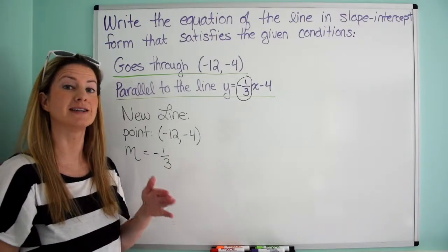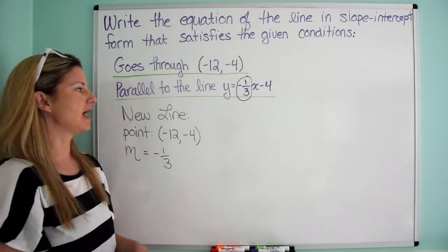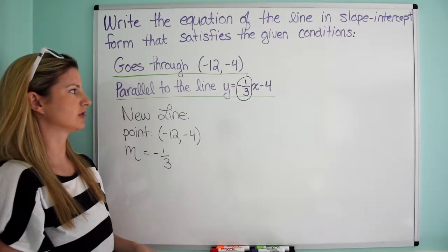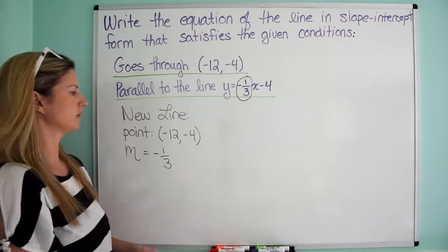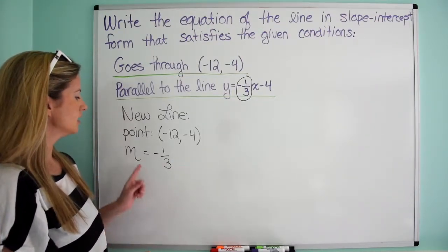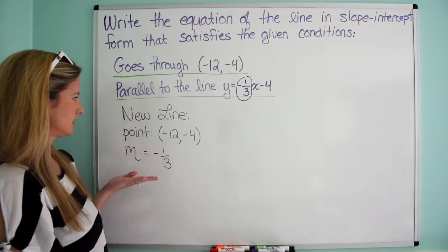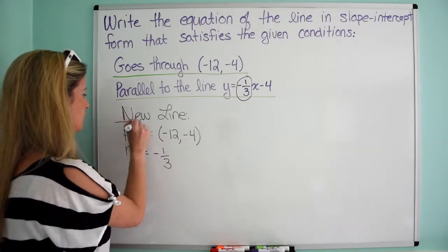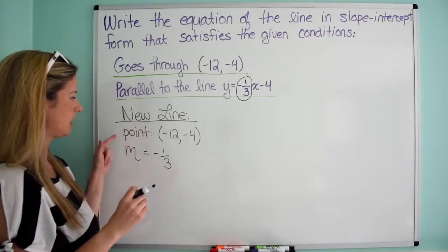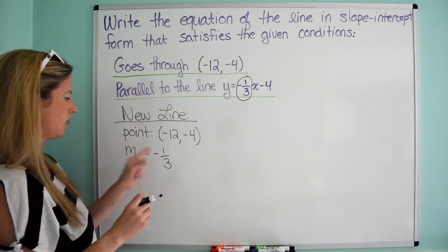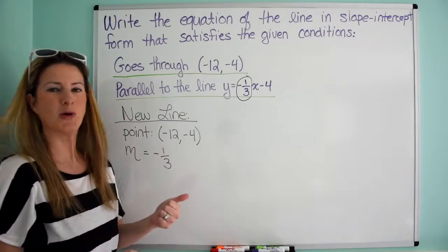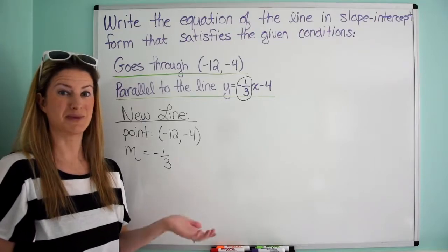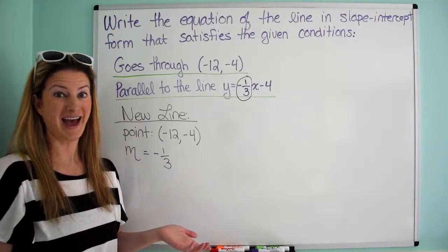Parallel lines have the same slope, and perpendicular lines have slopes that are opposite reciprocals of each other. So here's our new line — we have a point and we have a slope. And if we have a point and a slope, we can write the equation of the line.